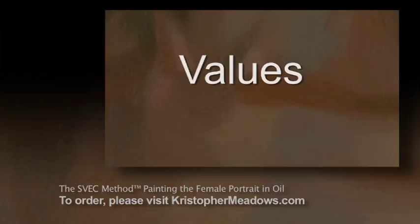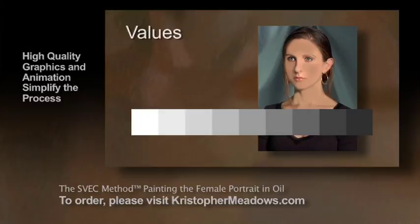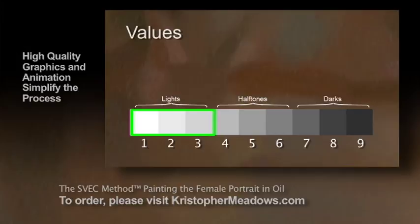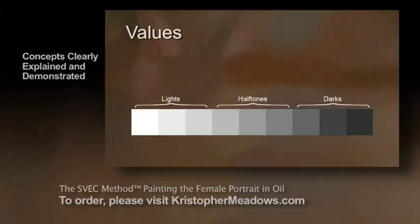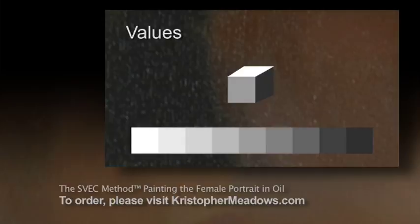It's a good idea to draw with a proper value range, otherwise your object will seem flat. It's important to have lights, half tones, and darks — it creates depth in your image. Values one through three represent your lights, values four through six represent your half tones, and values seven through nine represent your darks. If you take one basic value from each of those three value families, you can create a three-dimensional form.